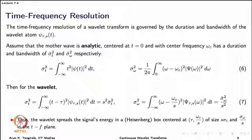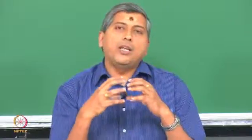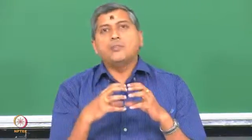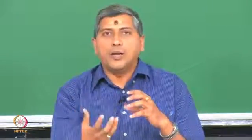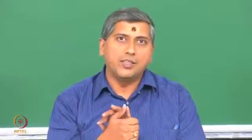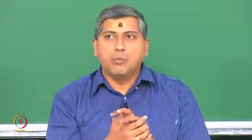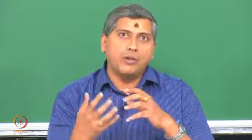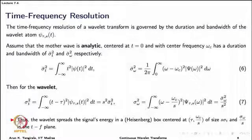The scalogram is spreading or capturing the energy of the signal not at a single point in the time-frequency plane but over a range — a box. These boxes are called Heisenberg boxes because they arise from the uncertainty principle, or equivalently the duration-bandwidth principle. Because of the parallel between the duration-bandwidth principle and the Heisenberg uncertainty principle, these boxes are called Heisenberg boxes. Their widths along the time and frequency axes need to be determined.